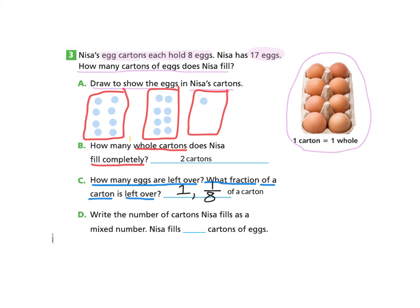Now let's take a look at part D. Write the number of cartons Nisa fills as a mixed number. Nisa fills blank cartons of eggs. So remember a mixed number is a number that is a whole number and a fraction. And when we have the leftover egg, which is one of eight, because there are eight spots, so our mixed number is two and one eighth. If you would like to go back and rewatch this video, you may do so at any time. And you can pause along the way as needed.